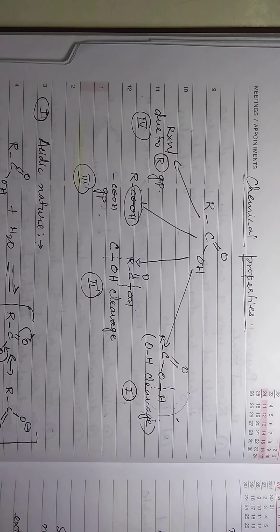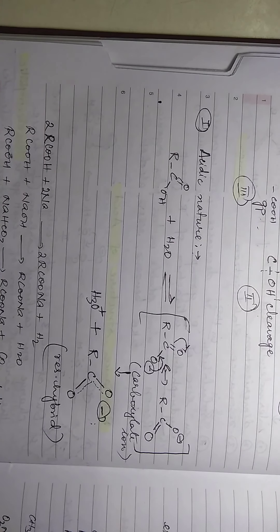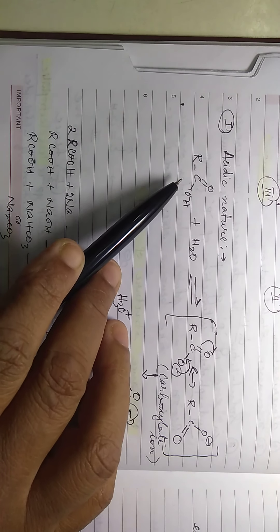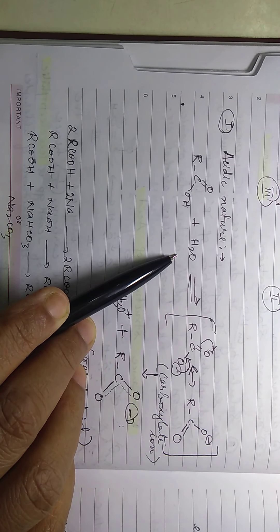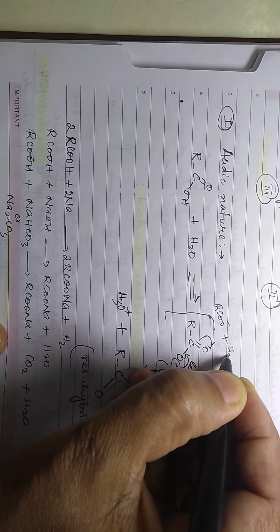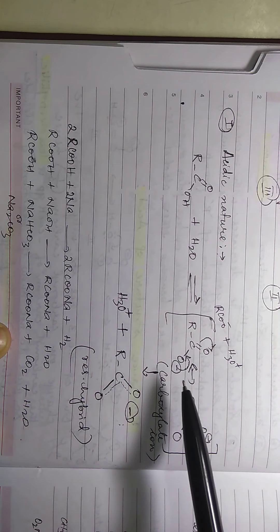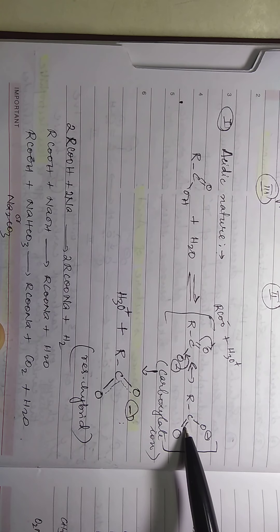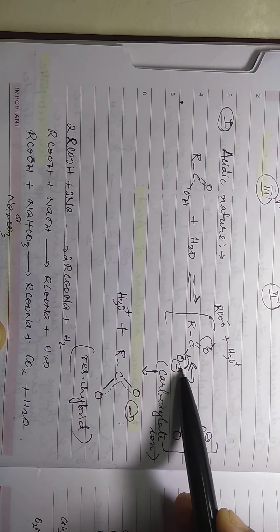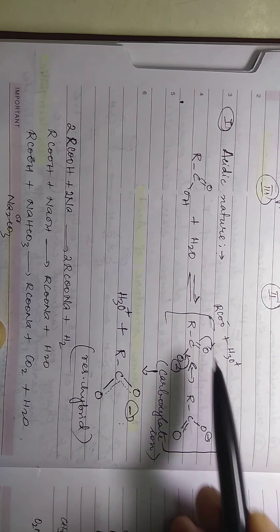O-H cleavage means the acid is showing acidic character. RCOOH plus water gives RCOO minus plus H3O plus. The RCOO minus carboxylate ion can be written in two resonance forms: the negative charge on one oxygen shifts, converting to a double bond, while the double bond becomes a negative charge — stabilizing the carboxylate ion through resonance.